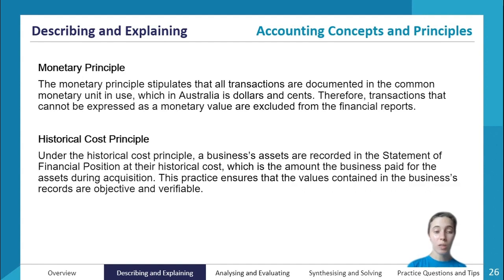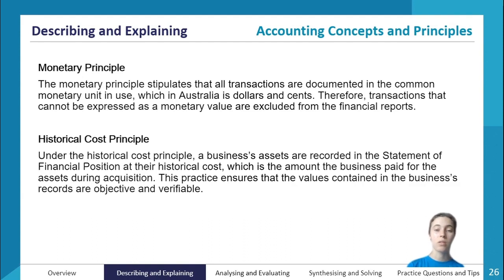Under the historical cost principle, a business's assets are recorded in the statement of financial position at their historical cost — the amount the business paid for the assets when they bought them. This ensures that the values in the business's records are objective and verifiable. It prevents the business from inflating asset values to skew the appearance of the financial statements or to show assets as far more valuable than they really are.